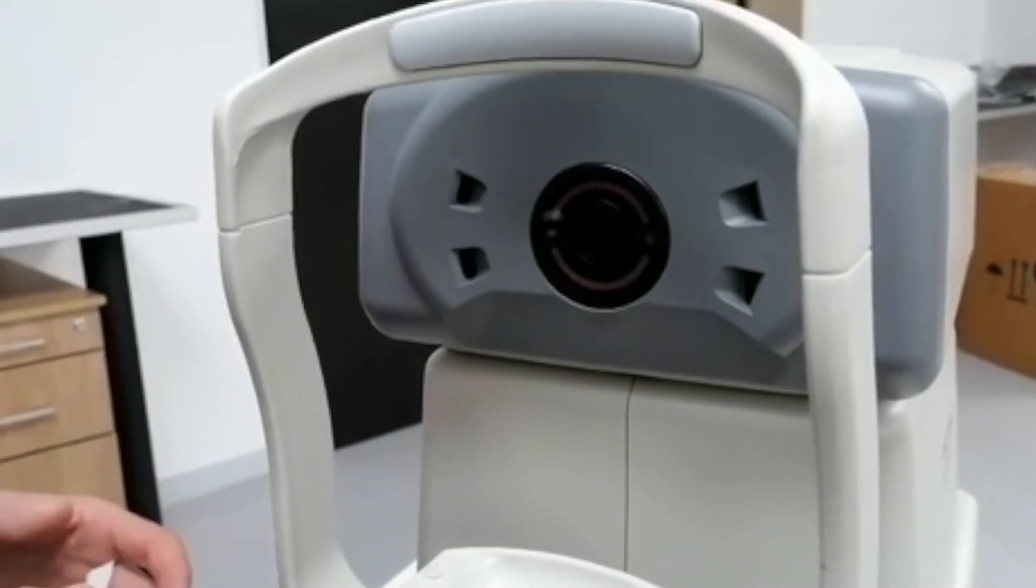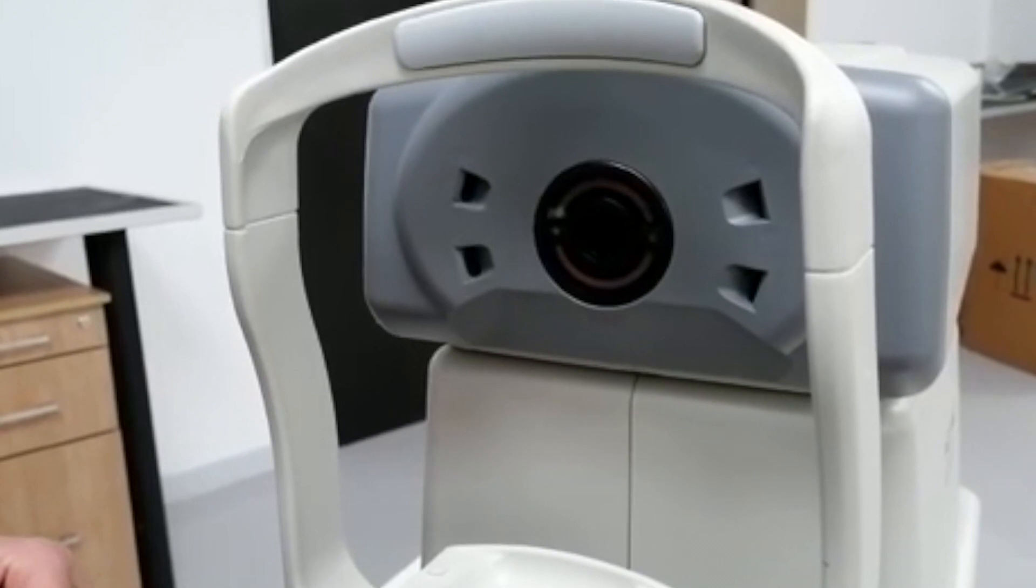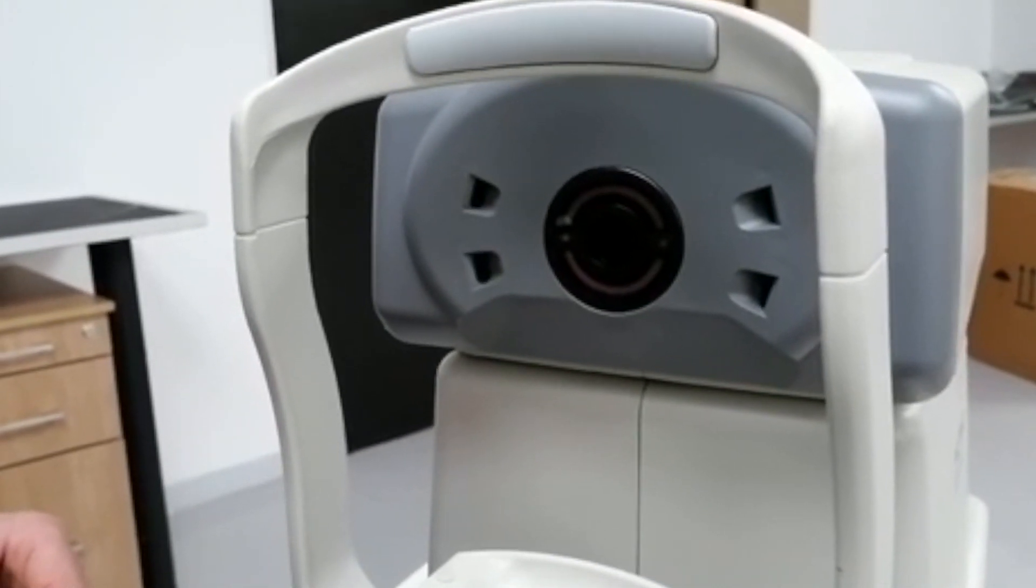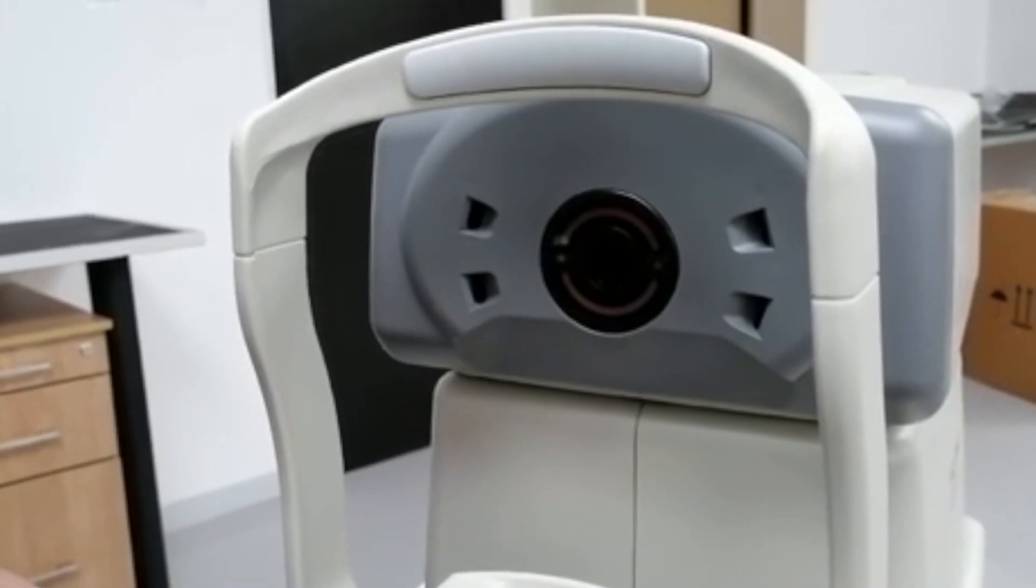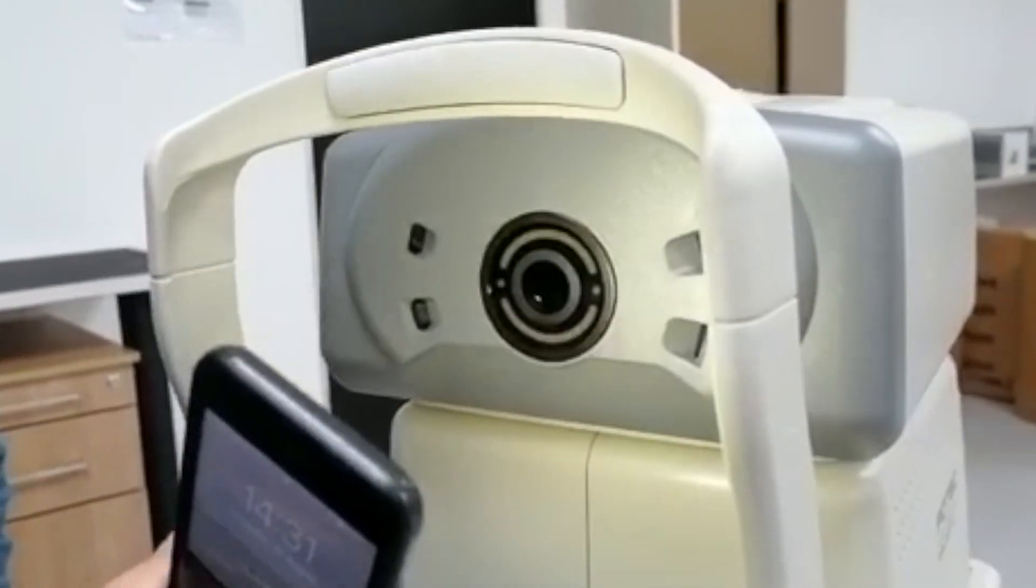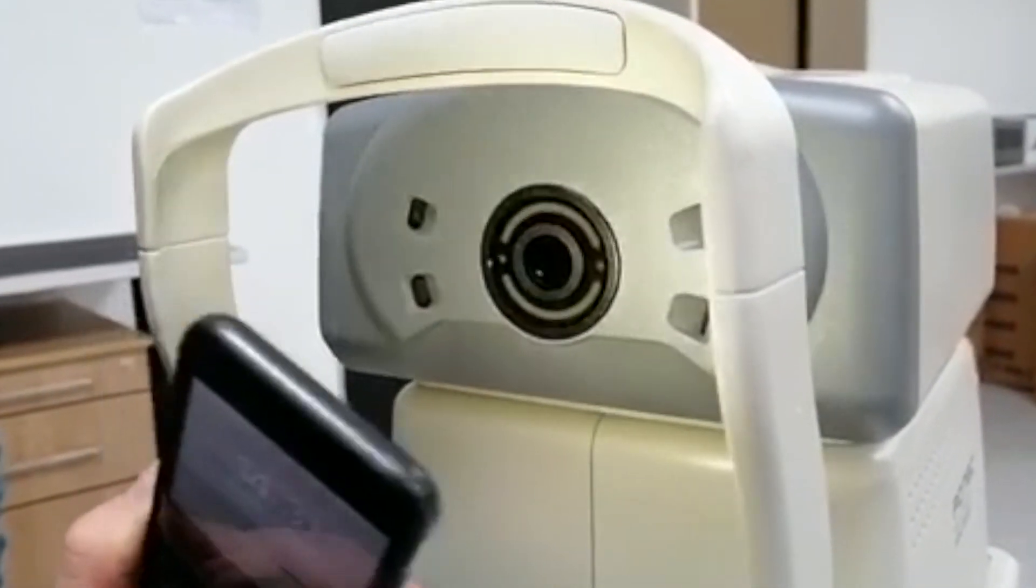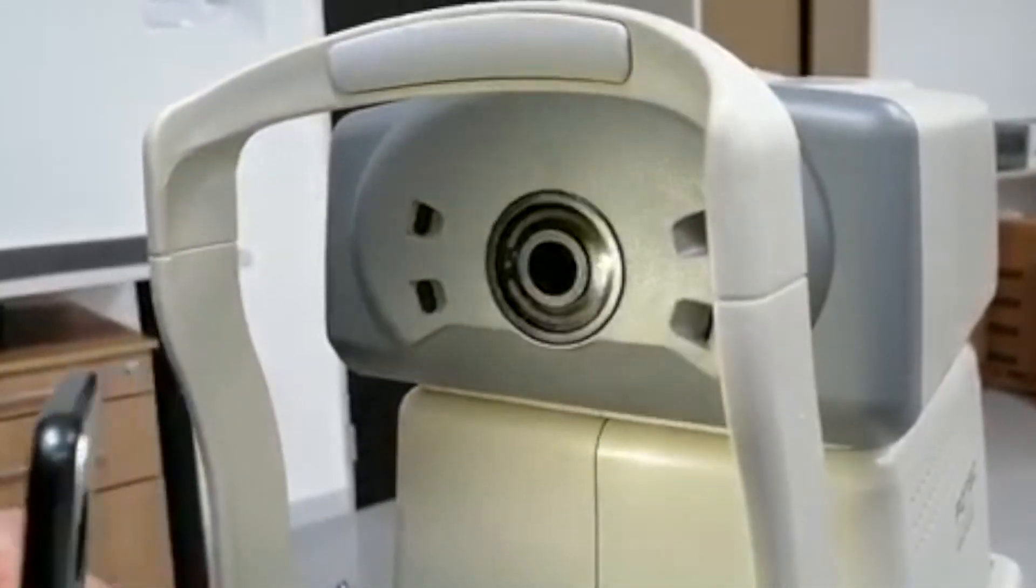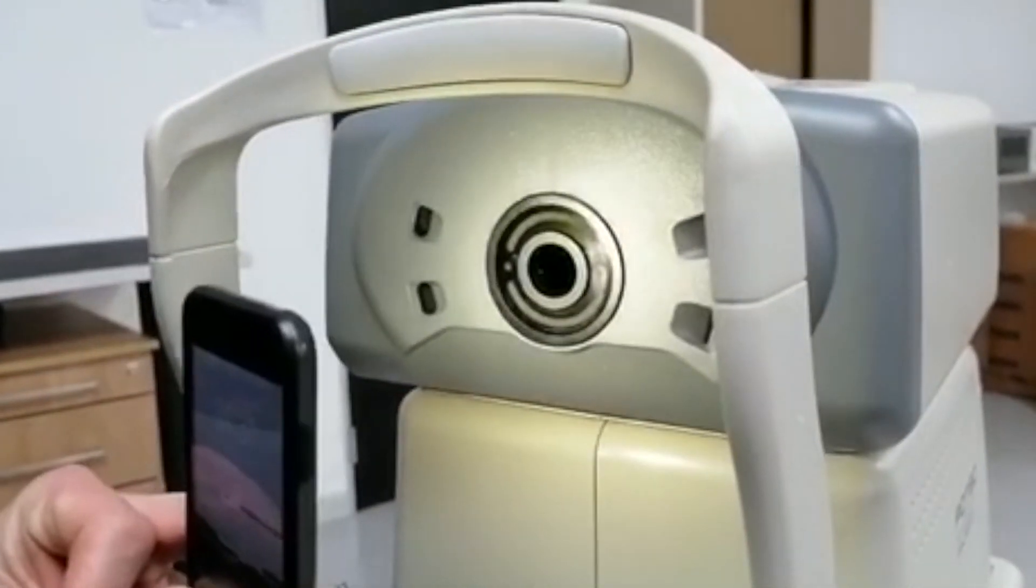Today we're going to do a little video on cleaning the lens on the autorefractor, the PRK 5000. First we look inside if there's any marks or finger marks inside there, maybe makeup or that kind of stuff. Shine a light on the interior lens.